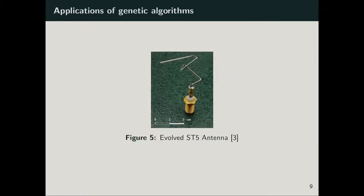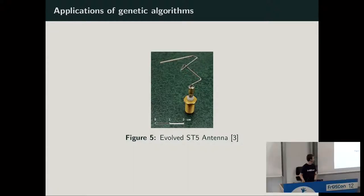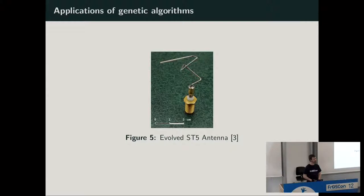Others have also used genetic algorithms in industry. For example, NASA, when developing an antenna for the ST5 mission, had engineers working on it for years without finding a viable solution. They eventually put all the constraints into a simulation and used a genetic algorithm, which evolved a quite counter-intuitive antenna design. It was deployed on the spacecraft, is still in orbit, and turned out to work better than anything the engineers had designed.